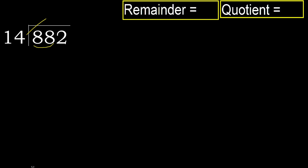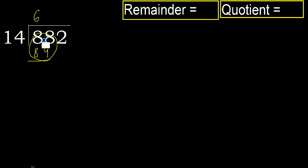But not greater. 14 multiplied by 6 is 84 — it is not greater. 14 multiplied by 7 is greater. Subtract: 88 minus 84 is 4. Next: bring down 2, giving 42.